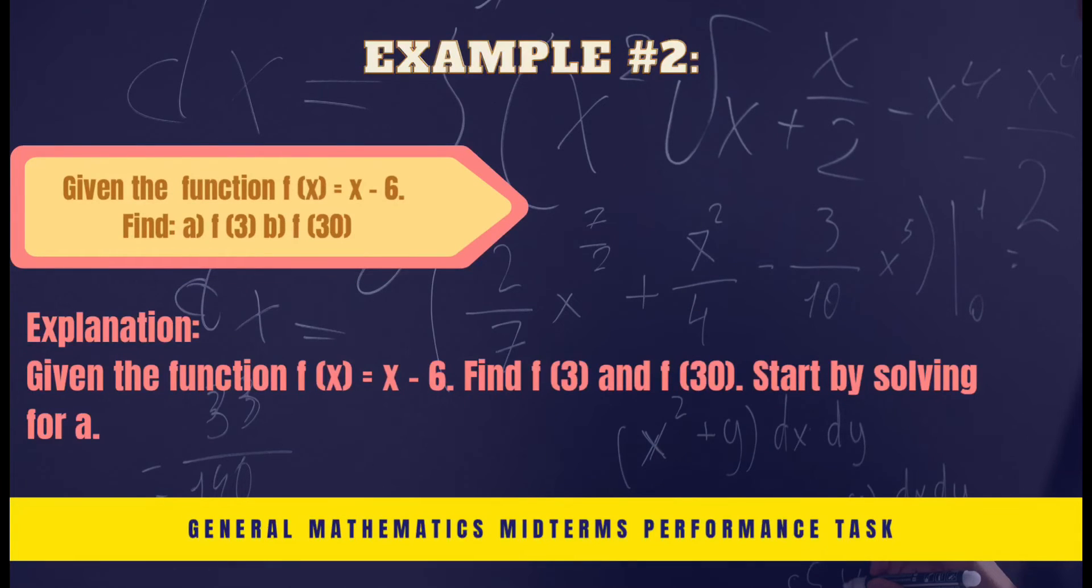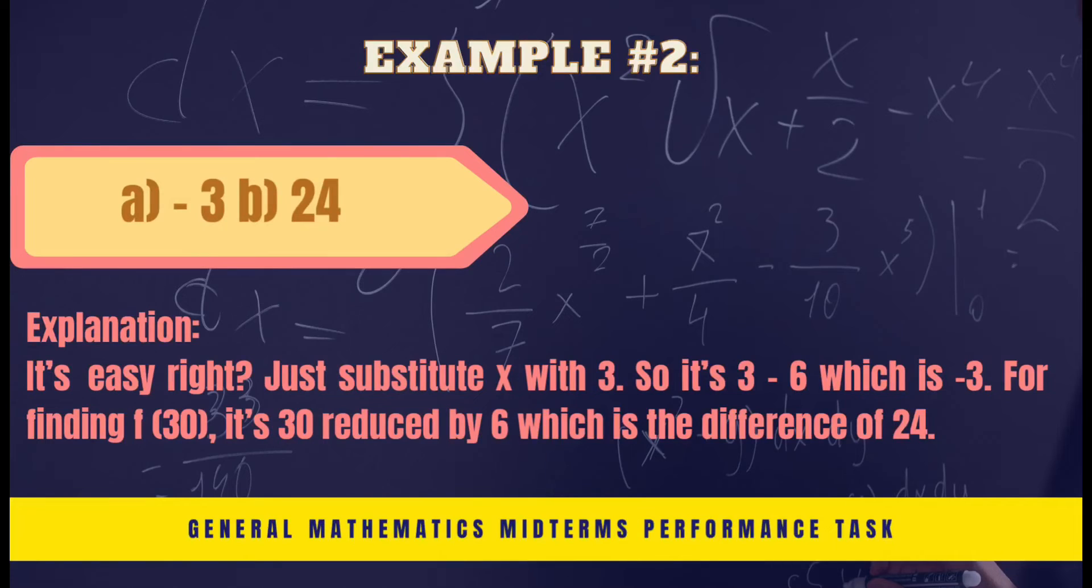Given the function f(x) equals x minus 6, find f(3) and f(30). Start by solving for f(3). Substitute x with 3, so it's 3 minus 6, which is negative 3.